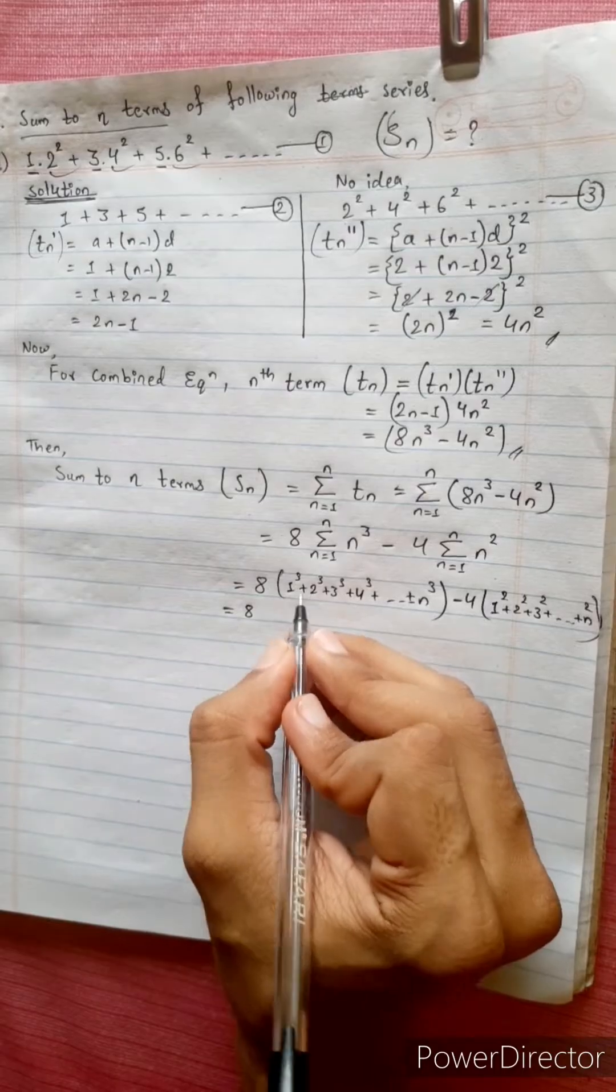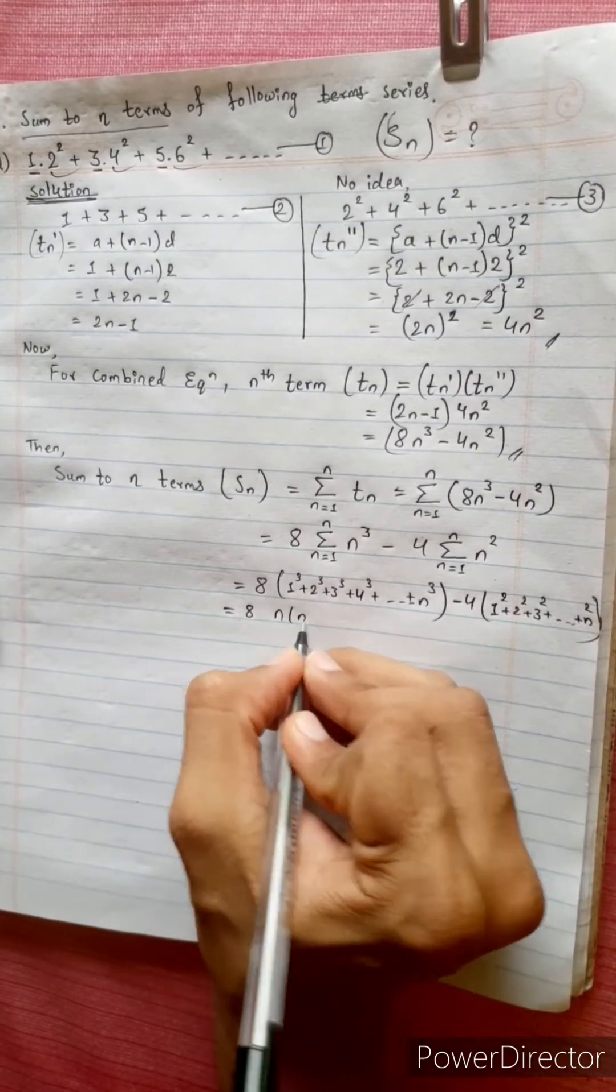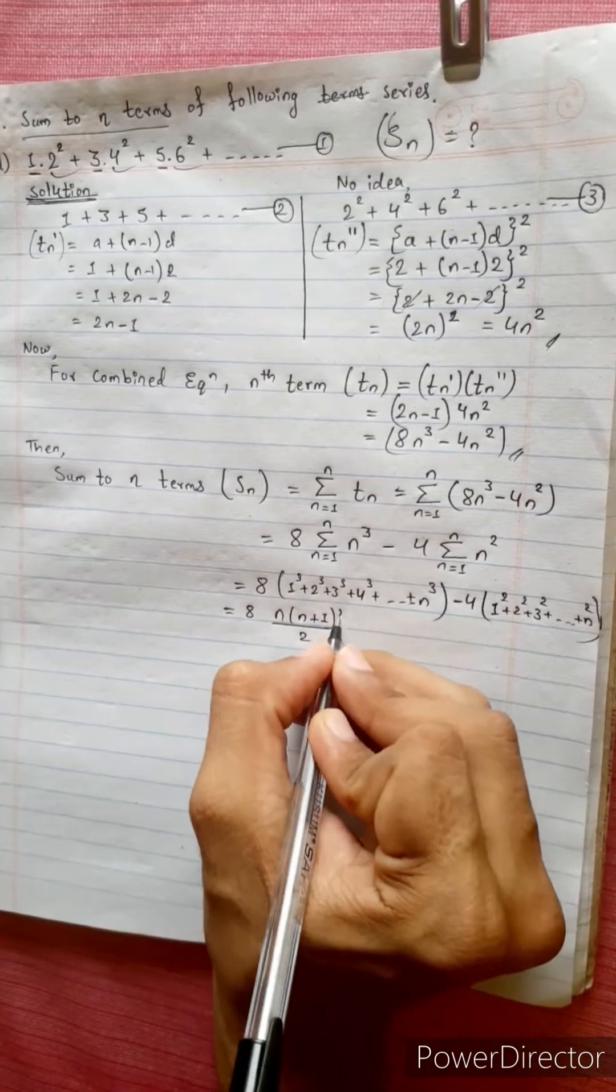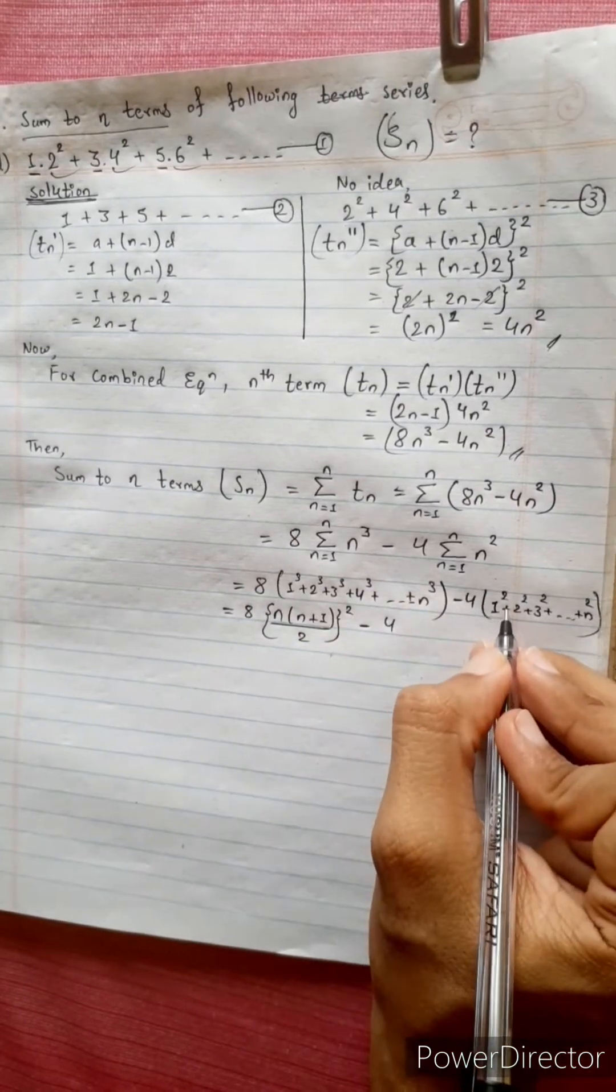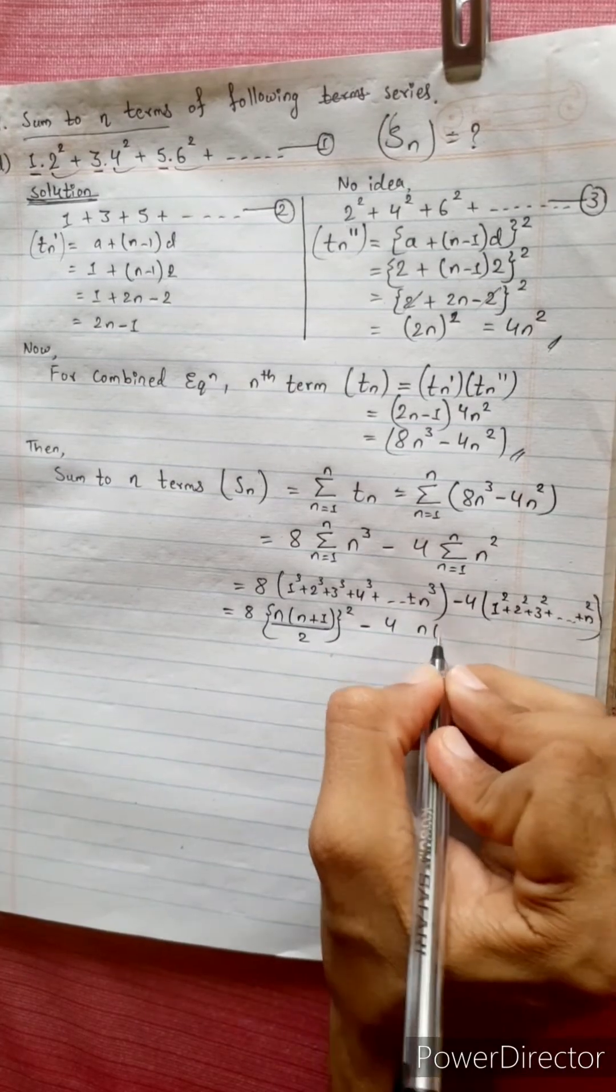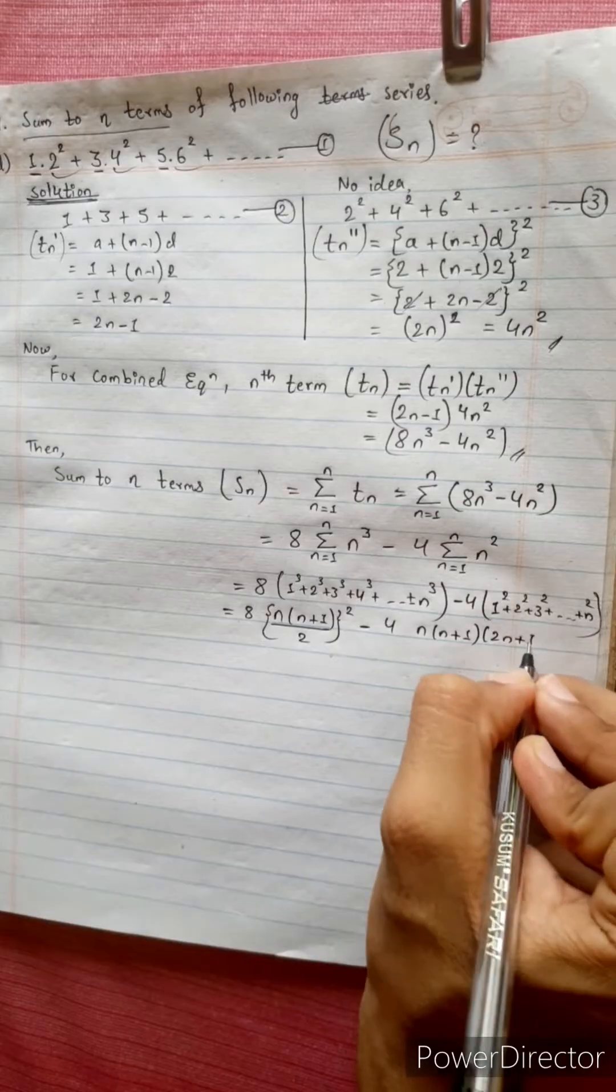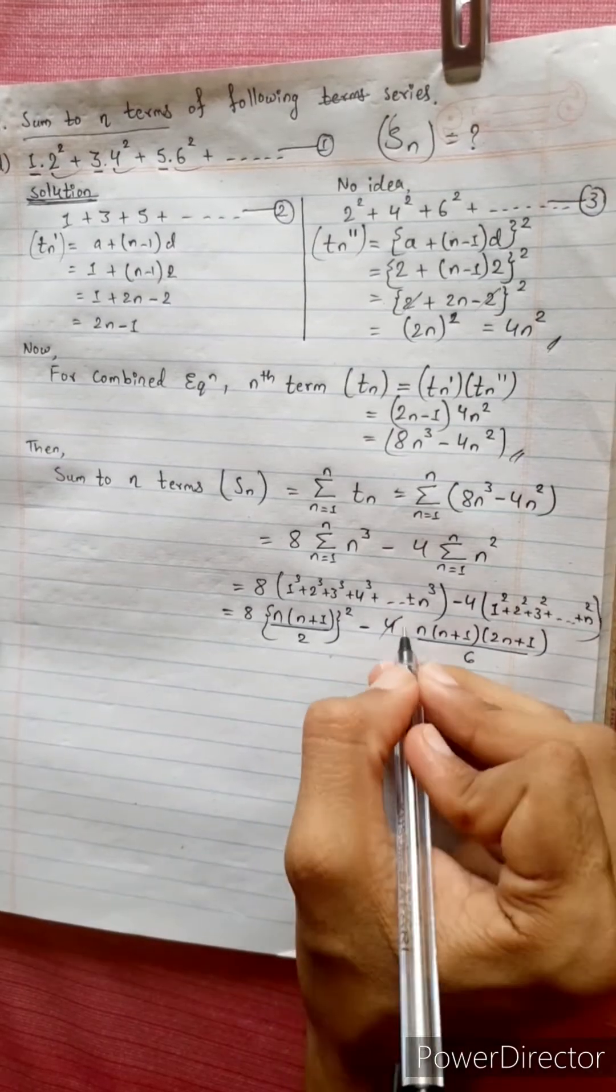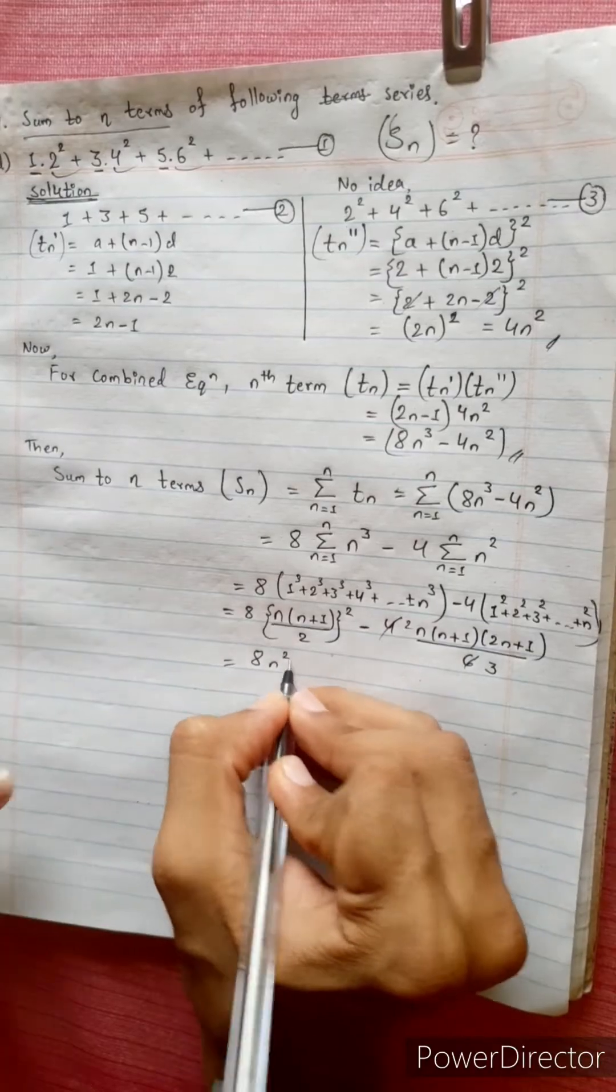Equals to sum of cubes of natural numbers. Direct formula: n times n plus 1 over 2, whole squared. Minus sum of squares of natural numbers: n times n plus 1 times 2n plus 1 over 6. Equals to 8 times n squared times n plus 1 squared...